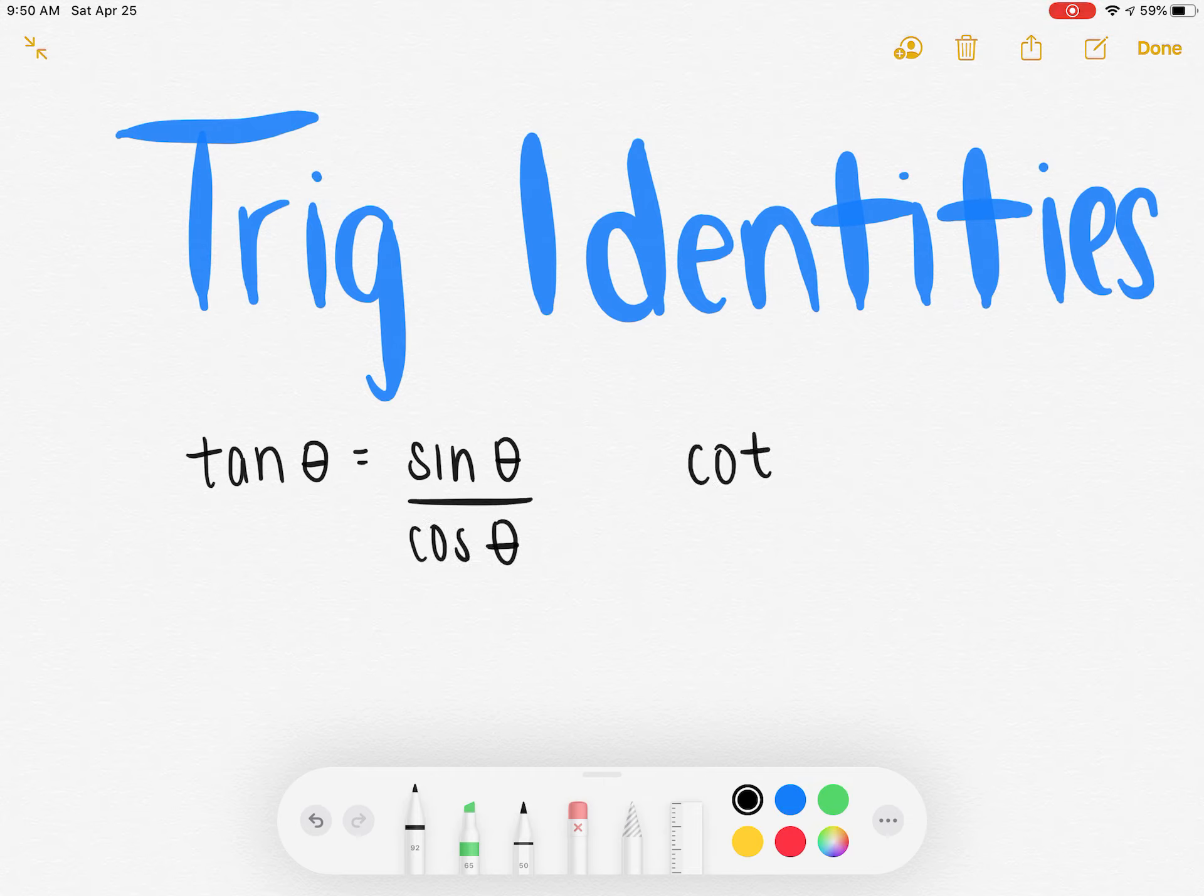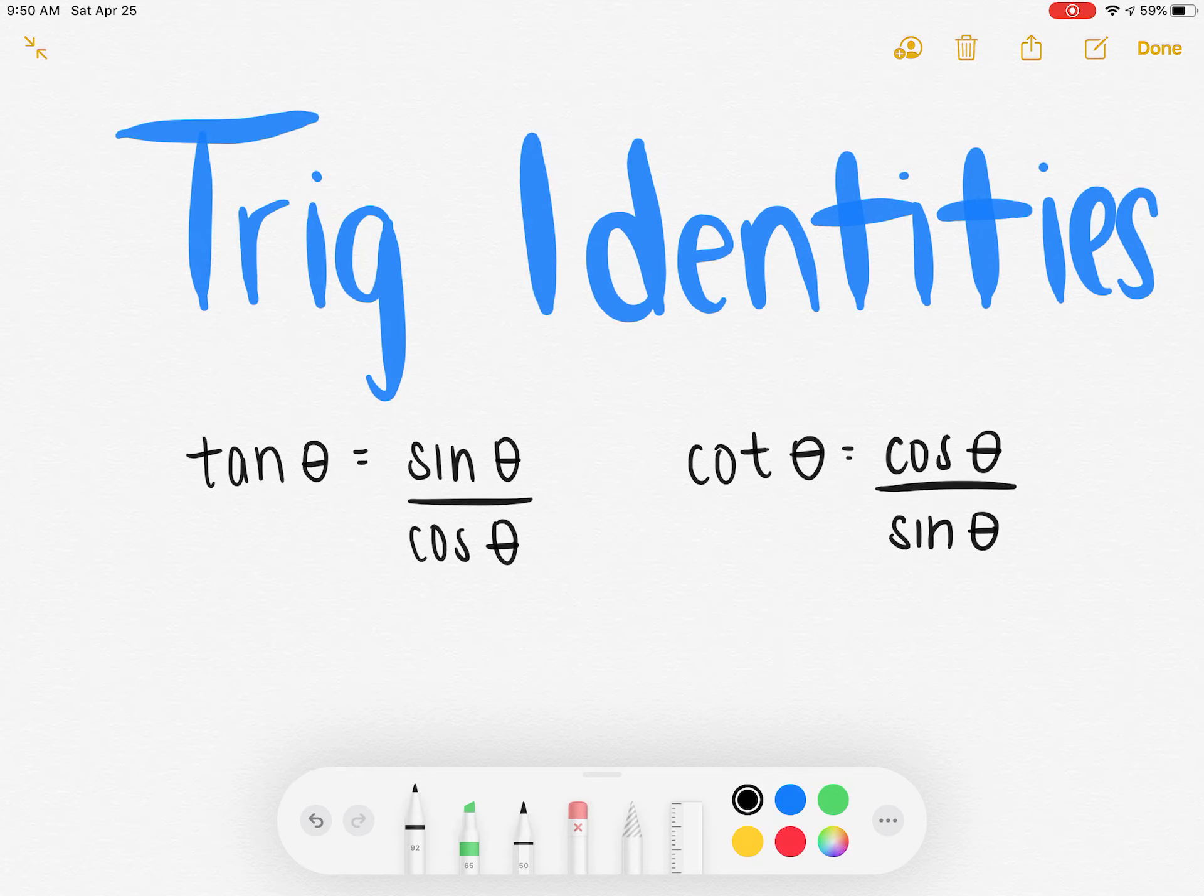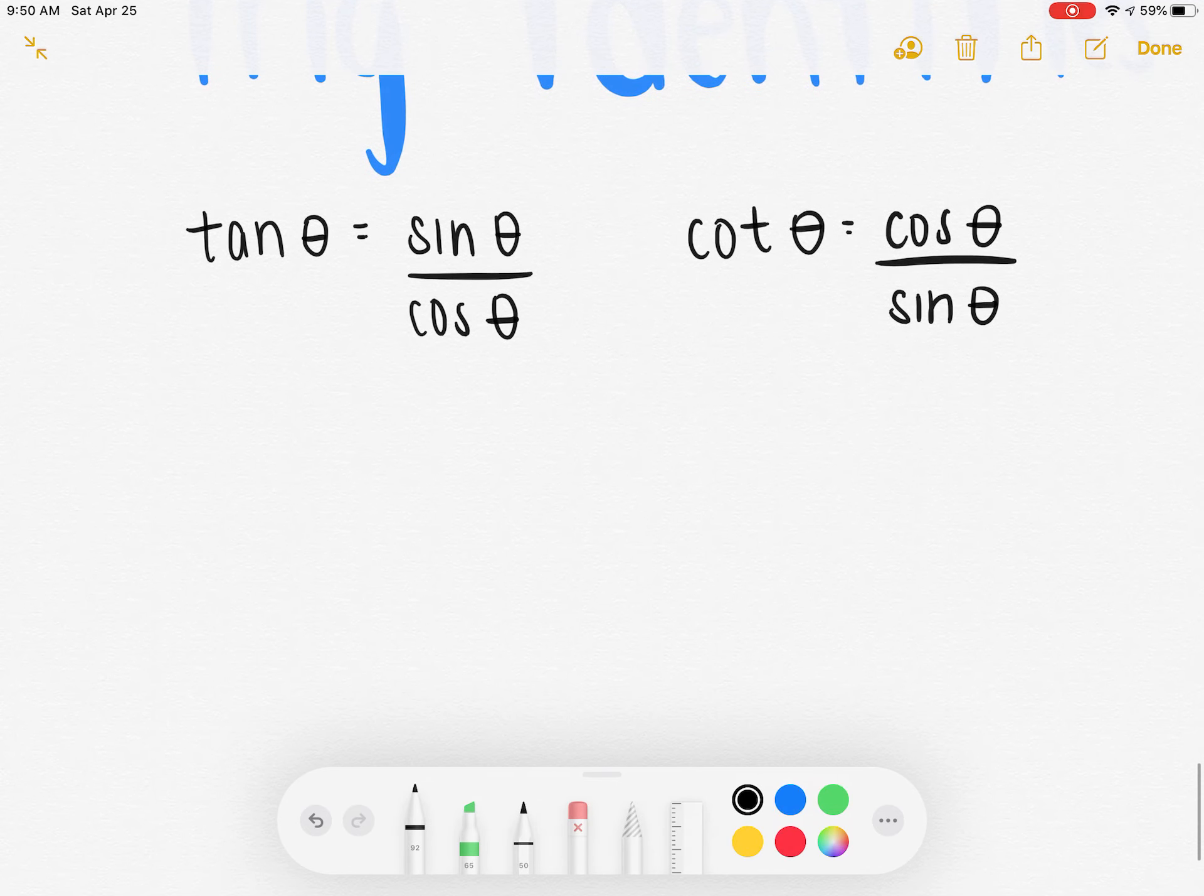And cotangent of theta is equal to cosine of theta over sine of theta. You'll also need to know that...